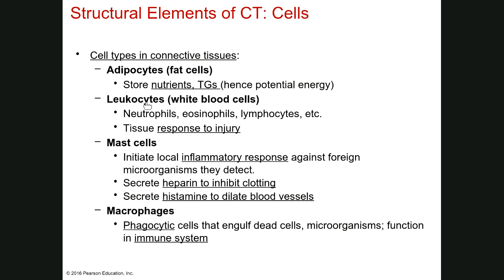Leukocytes are white blood cells. There are different kinds but you don't need to know the specific types for now — save that for Bio 139. Just know that leukocytes are white blood cells that play a role in response to injury. Mast cells are a pretty interesting cell found all throughout connective tissue — they have a variety of functions.